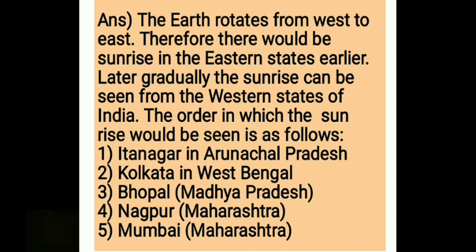The Earth rotates from West to East. Therefore, there would be sunrise in the eastern states earlier. Later, gradually, the sunrise can be seen from the western states of India. The order in which the sunrise would be seen is as follows.